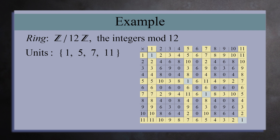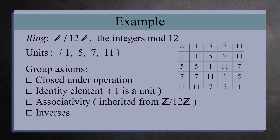You can check that this is a group by looking at the group multiplication table for these four units. This table only contains the numbers 1, 5, 7, and 11, so it's closed under multiplication. There is a 1 in every row and column, so each element has an inverse. So the units for the integers mod 12 form a group of order 4.